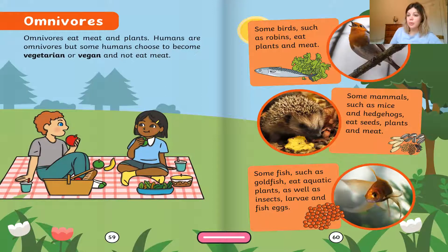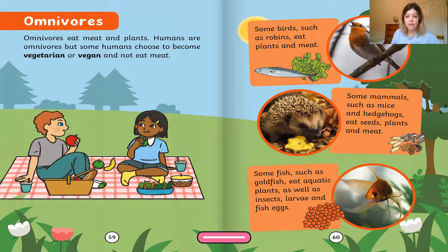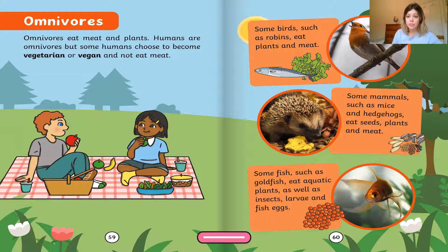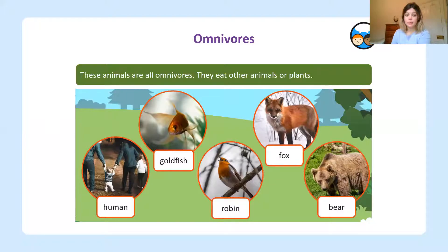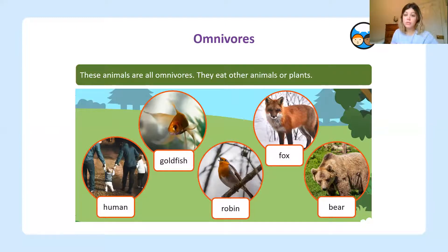Some of the animals that are omnivores include some birds — robins eat plants and meat. Some mammals such as mice and hedgehogs eat seeds, plants and meat. You can even get some fish that eat plants such as algae found on the ocean floor, and they might even eat small fish eggs. So these animals — including humans, a fox, and a bear — are all omnivores. They eat other animals or plants.